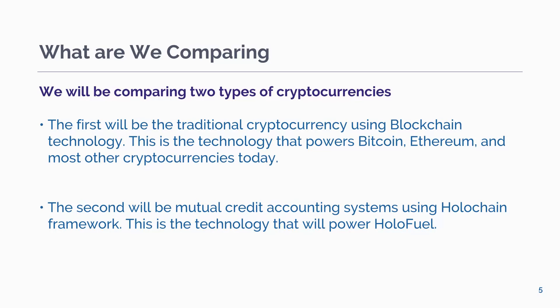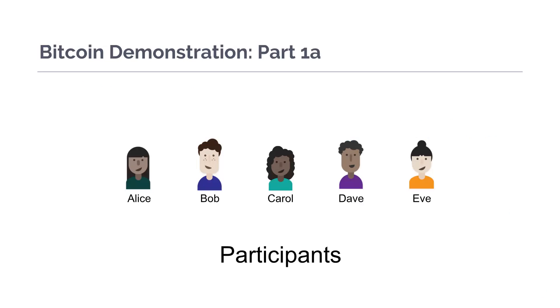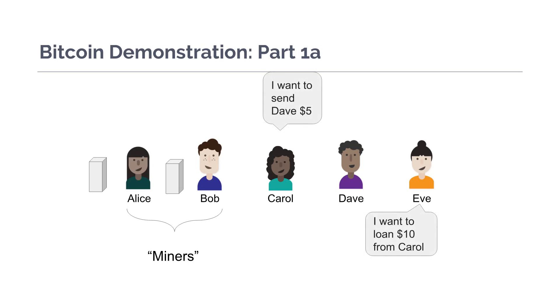Today we're going to be comparing two types of cryptocurrencies. The first will be the traditional cryptocurrency using blockchain technology — this is the technology behind Bitcoin, Ethereum, and most other cryptocurrencies today. The second will be mutual credit accounting systems using Holochain, which is the technology that will power HoloFuel. These are the participants of the network in blockchain, and some of these people have more capital than others and can use this to buy powerful computers. These people are the miners, and they listen for transaction requests and create blocks of transactions.